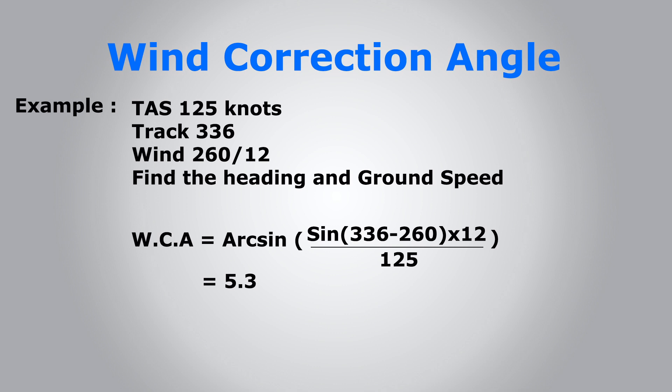So the track is 336 and the wind is blowing from the left, so we correct into the wind. The track minus the wind correction angle, which is 336 minus 5 degrees, gives us a heading of roughly 331. If you cross-check it on the flight computer or any app, you will find exactly a heading of 331.